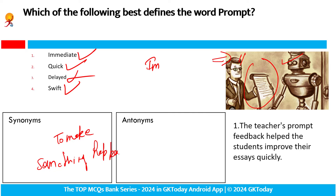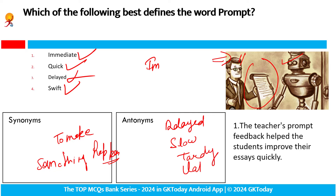Antonym hai delay, deri hona, slow, tardy, late, intermission. The teacher's prompt feedback helped the students improve their essays quickly. So teacher's prompt feedback — immediate feedback — helped students improve their essays quickly.